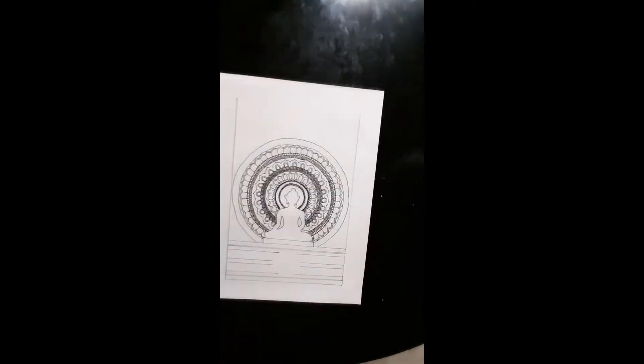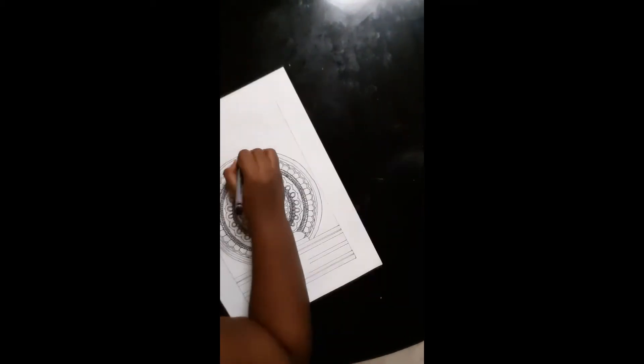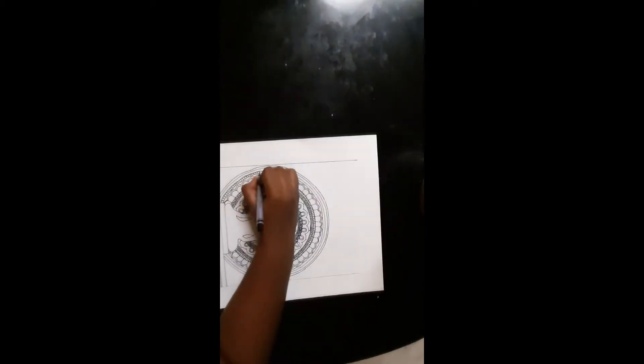Geometrical mandalas are the most well-known type of them all. They are the ones that you encounter as doodling exercises or in coloring books.